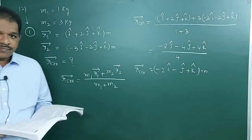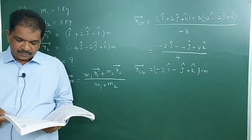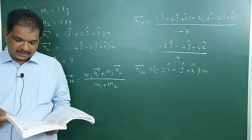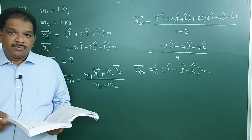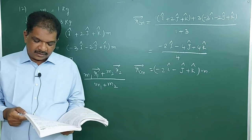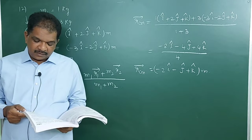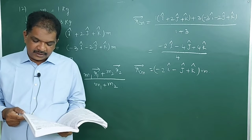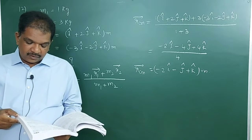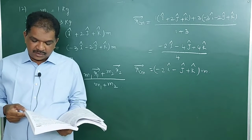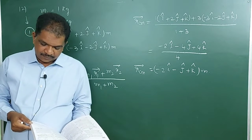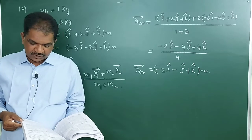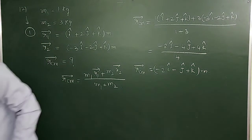Next, question number 13. A circular disk of moment of inertia I_t is rotating in the horizontal plane about its symmetric axis with constant angular velocity omega_i. Another disk of moment of inertia I_b is dropped coaxially onto the rotating disk. Initially the second disk has zero angular speed. Eventually both disks rotate with constant angular speed omega_f. What is the energy lost by the initially rotating disk to friction?